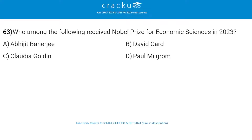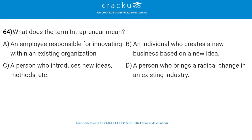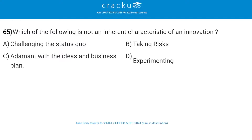Who among the following received the Nobel Prize for Economic Sciences in 2023? The answer is Claudia Goldin. What does the term intrapreneur mean? The answer is an employee responsible for innovating within an existing organization. Which of the following is not an inherent characteristic of an innovation? The answer is being adamant with ideas and a business plan.